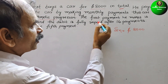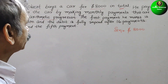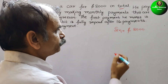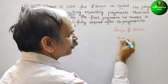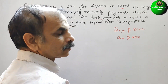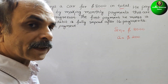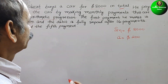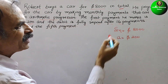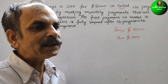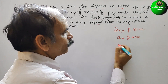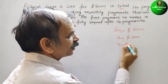Now the first installment — first payment — he makes $200. That means A. So we can say A is equal to $200. Next, what they have told: the debt is fully repaid after 16 installments. That means the number of installments is 16. So we can say N is 16.